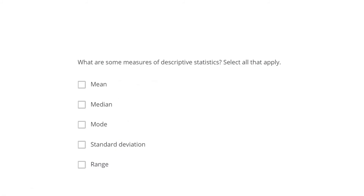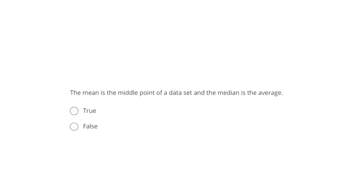Next question: What are some measures of descriptive statistics? Select all that apply. The correct answer is all of them - mean, median, mode, standard deviation, range, and variance - all come under descriptive statistics, giving you concrete results from the observation. Then: the mean is the middle point of a data set and median is the average - true or false? Obviously it is false. The mean is the average and the median is the middle point of the data set.